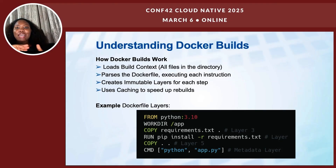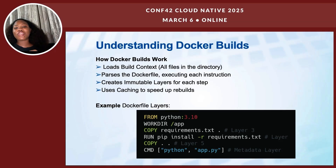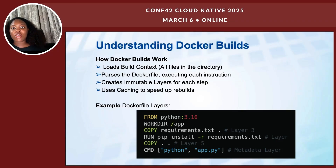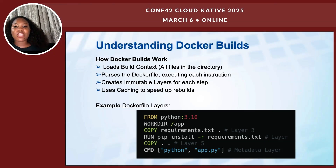These layers are immutable, so once they are built, they do not change. And the last thing that happens is that Docker uses caching to speed up rebuilds. When you need to rebuild your application using Docker, Docker reuses the unchanged layers to avoid redundant processing, making your build much faster.